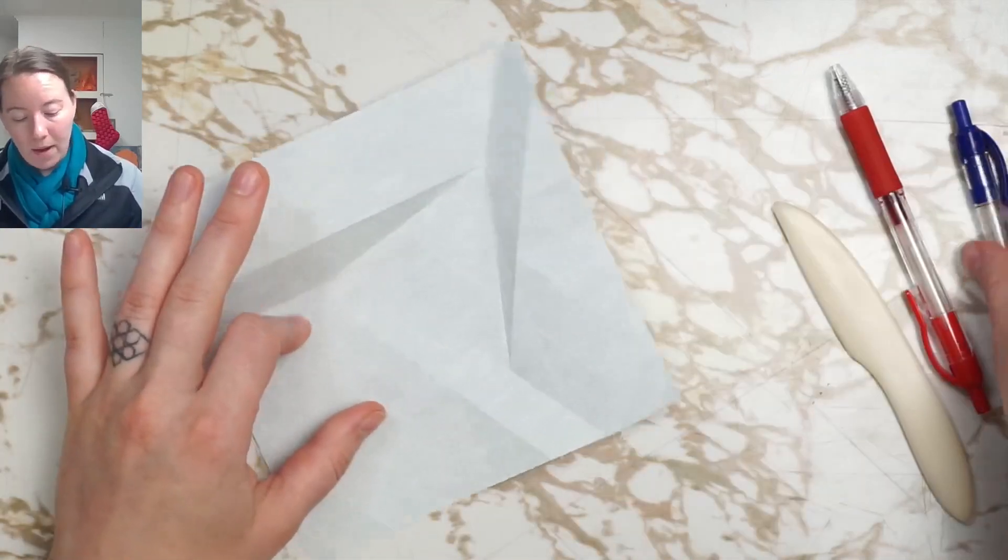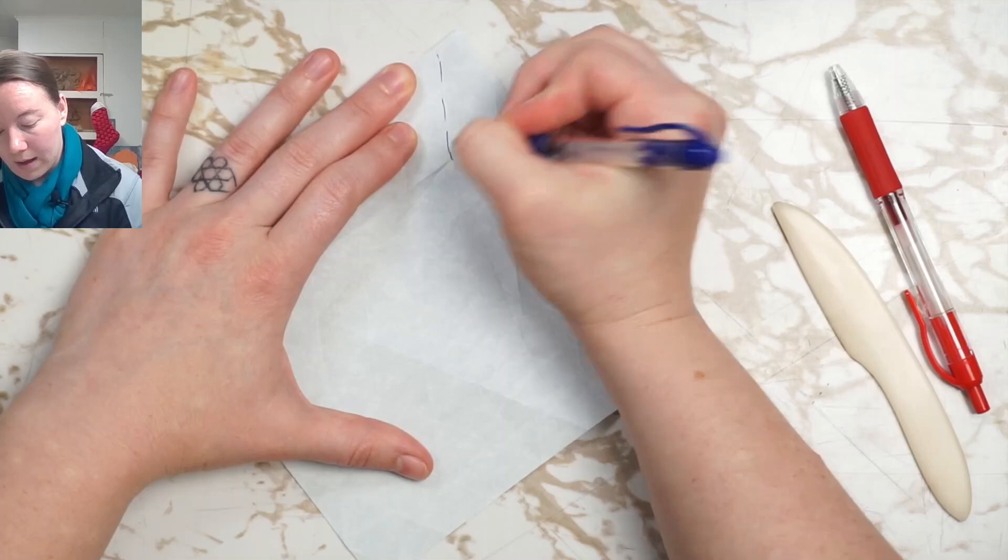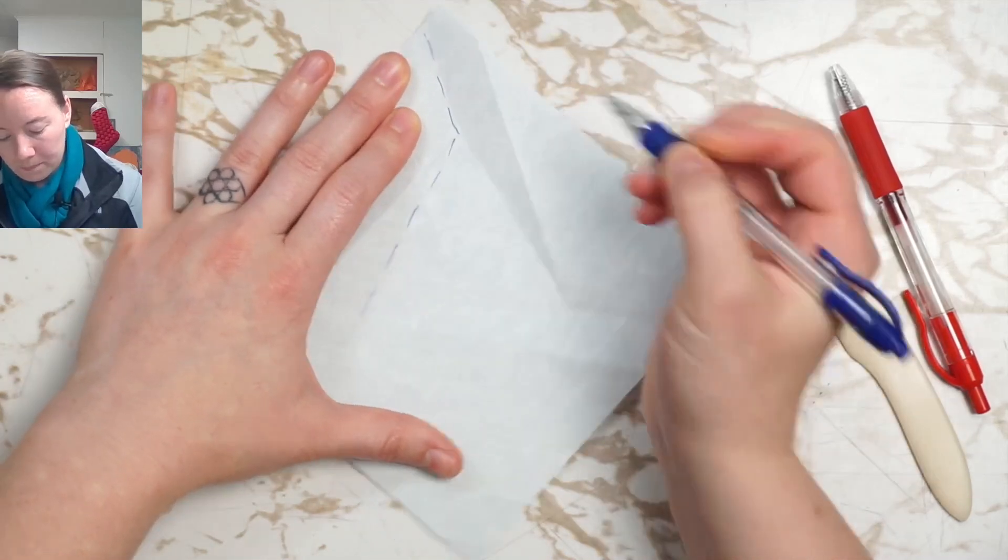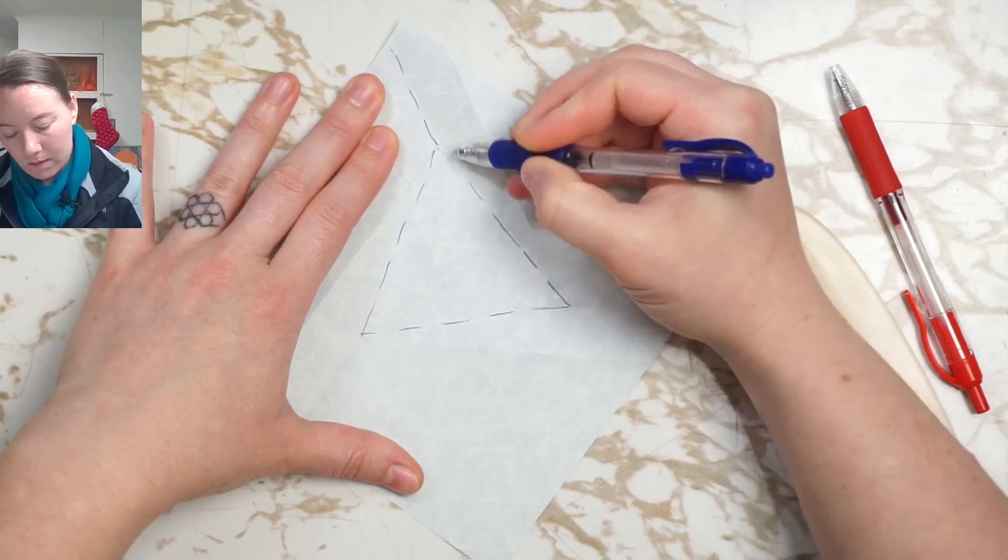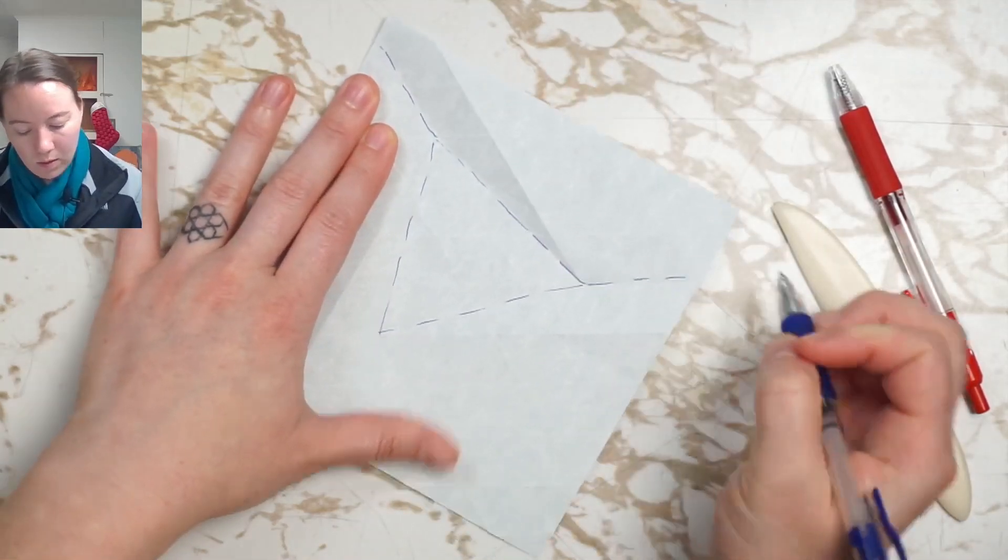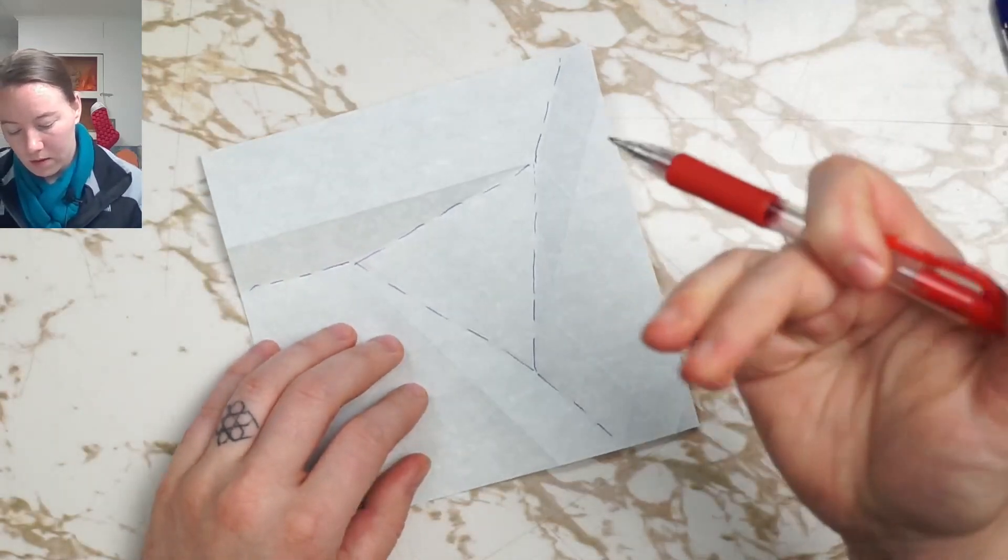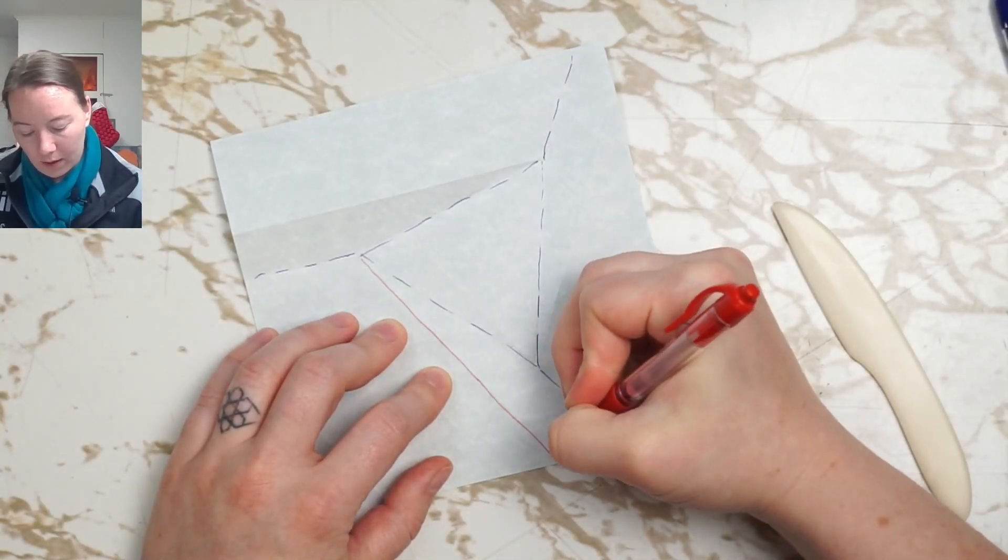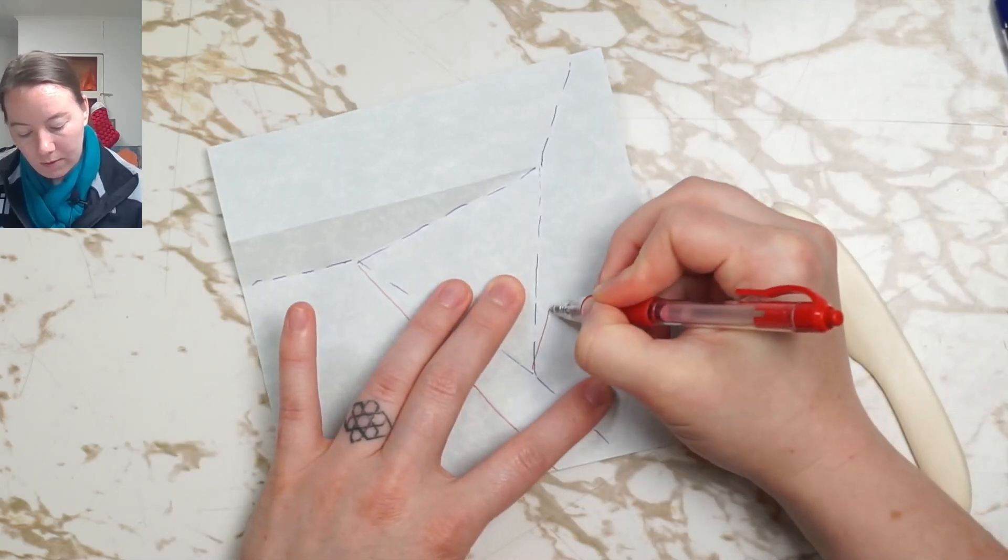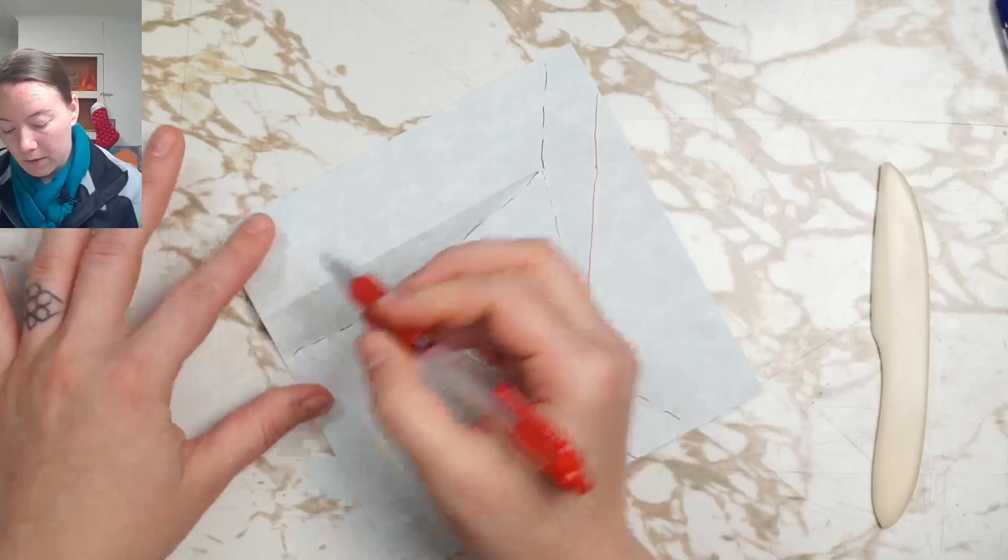And if we look at the back, we'll see that crease pattern with the mountain and valley folds swapped. And this will have the central triangle of the twist in valley folds instead of mountain folds.